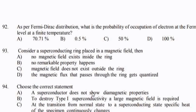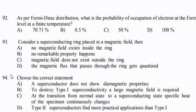As per Fermi-Dirac distribution, what is the probability of occupation of an electron at the Fermi level? Option C.